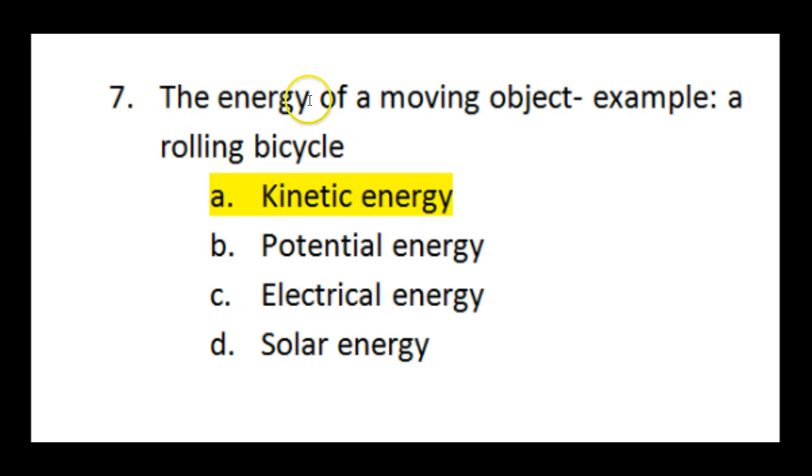Number seven says the energy of a moving object. Now this is a moving object. This is the whole object moving. Not the motion inside an object. That's heat energy. This is talking about a whole object moving, like a rolling bicycle. That is kinetic. Kinetic, like a kid who's energetic. It's moving. Kinetic, a kid who's energetic.